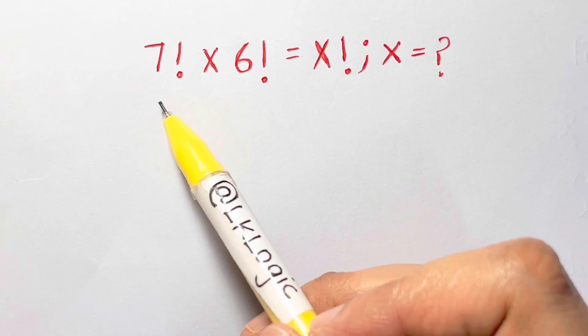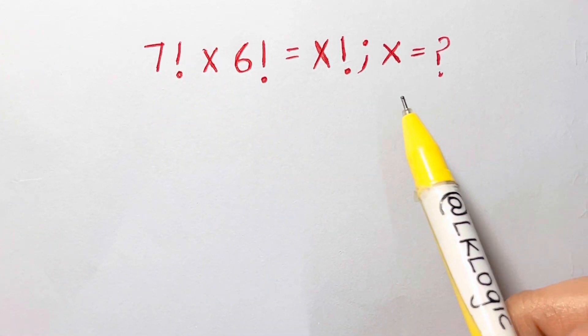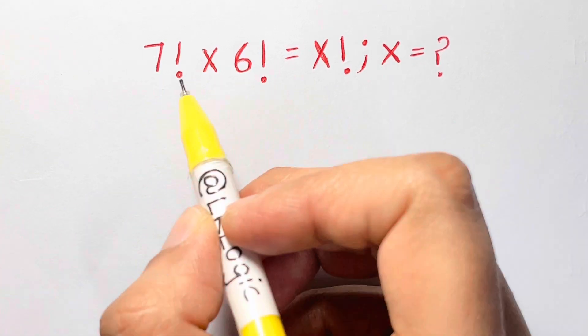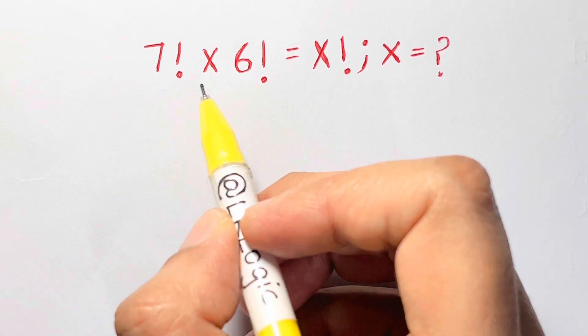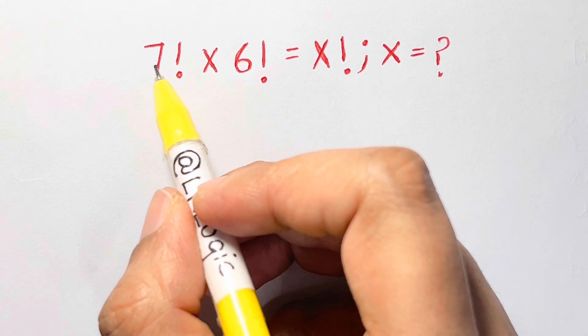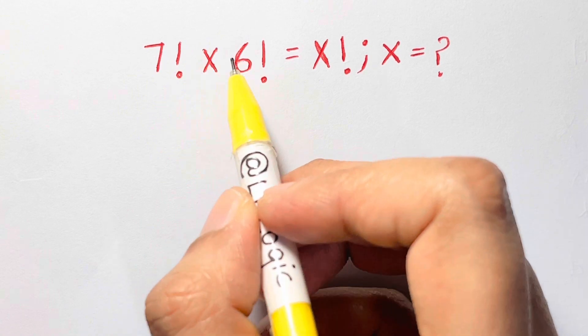Hi guys, here I am with another factorial problem for you. Now, 7 factorial, 6 factorial—this is not an exclamation mark, that's called factorial. Factorial means you have the same number multiplied to all the numbers below it.